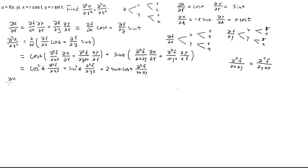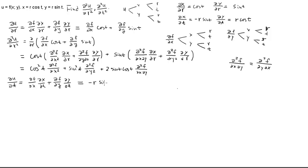The setup for ∂u/∂t is almost the same. We apply the chain rule: f_x·∂x/∂t + f_y·∂y/∂t. We have already calculated these: ∂x/∂t = negative r·sin(t) and ∂y/∂t = r·cos(t). So ∂u/∂t = f_x·(−r·sin(t)) + f_y·(r·cos(t)).